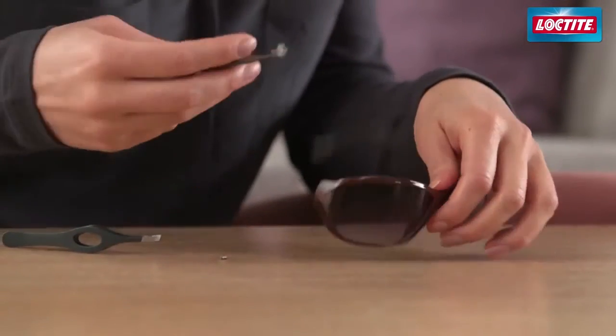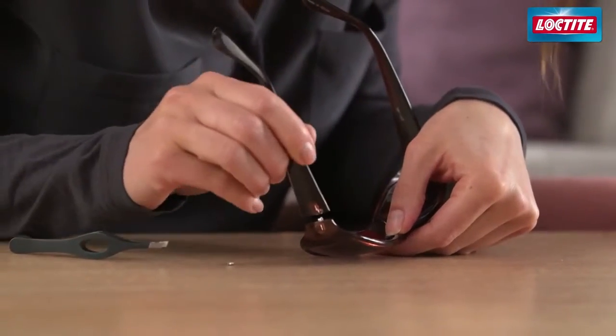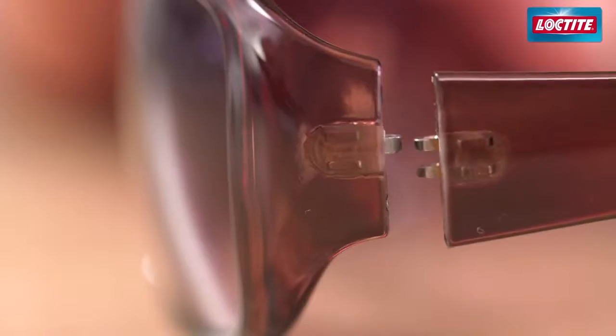Before getting started, make sure you have some tools around such as pliers and a screwdriver. Line up the two pieces of the hinge.